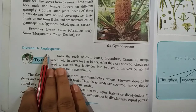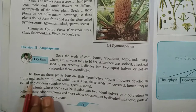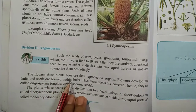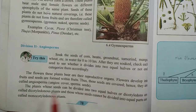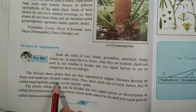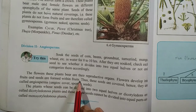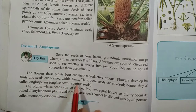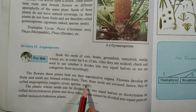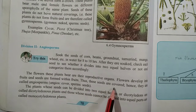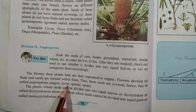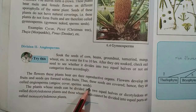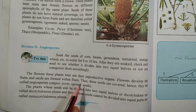The second division is Angiosperms. In Angiosperms, the flowers these plants bear are their reproductive organ. Flowers develop into the fruit and seeds are formed within fruits. Thus, these seeds are covered, and that is why seeds remain covered. Hence, they are called Angiosperms. Angio means cover and sperms means seed.